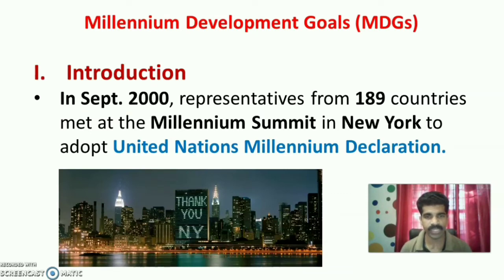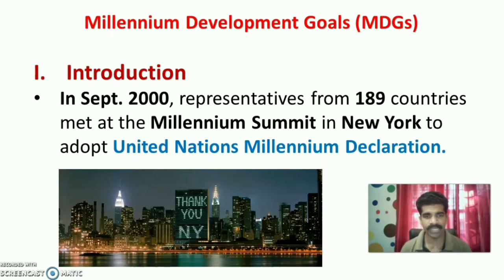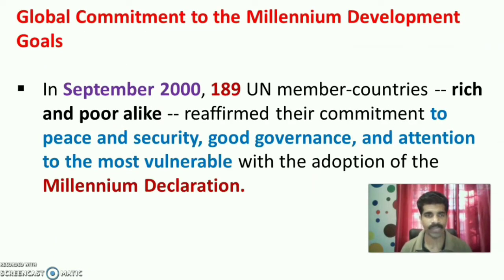In September 2000, representatives from 189 countries met at the Millennium Summit in New York to adopt the United Nations Millennium Declaration. This is known as the Millennium Development Goals. The 189 UN member countries, rich and poor alike, reaffirmed their commitment to peace and security, good governance, and attention to the most vulnerable with the adoption of the Millennium Declaration.